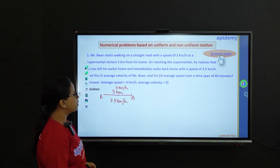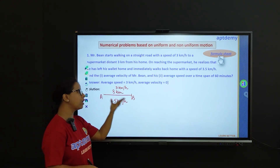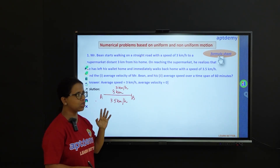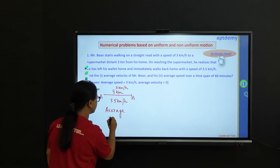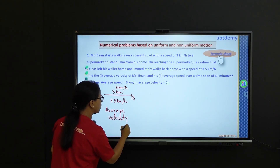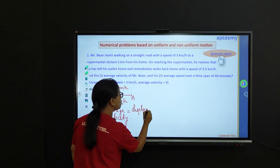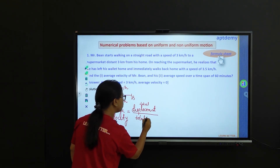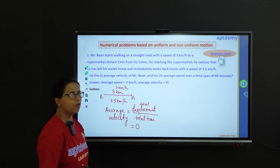We are asked to find out the average speed and average velocity. Clearly, Mr. Bean started from a point, went to the supermarket, and came back home. So there is no change in displacement — the initial and the final positions being the same. Average velocity is defined as the total displacement over the total time. Since displacement is 0, this gives us an average velocity of 0 for Mr. Bean.